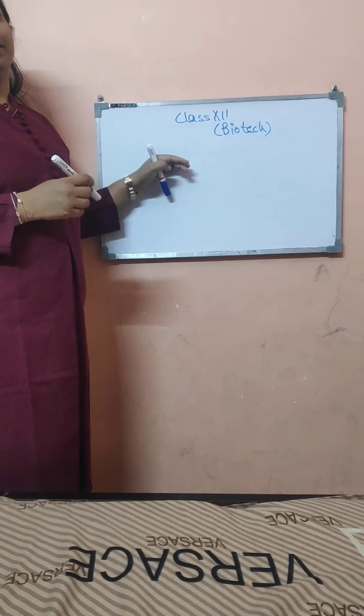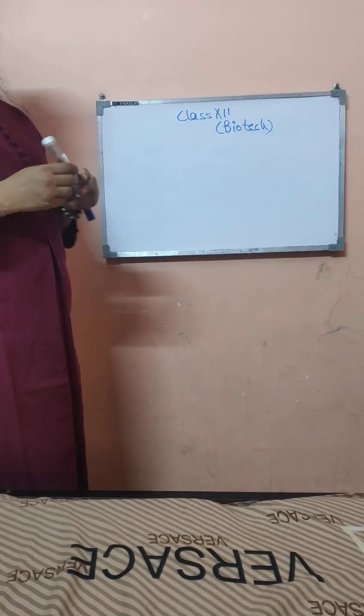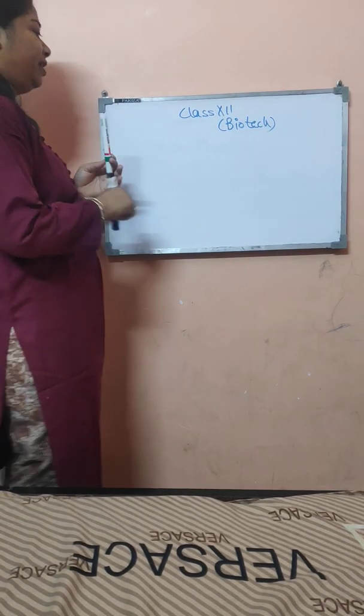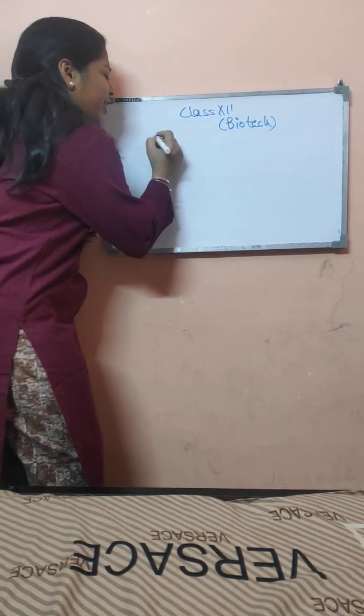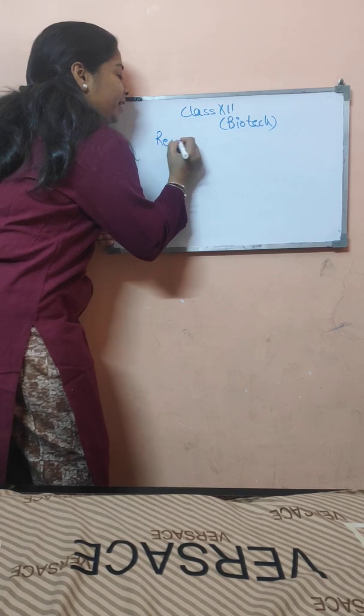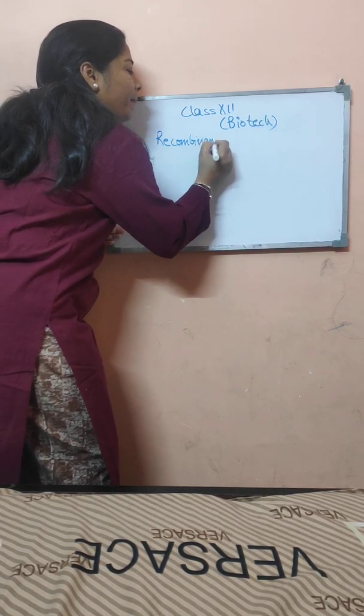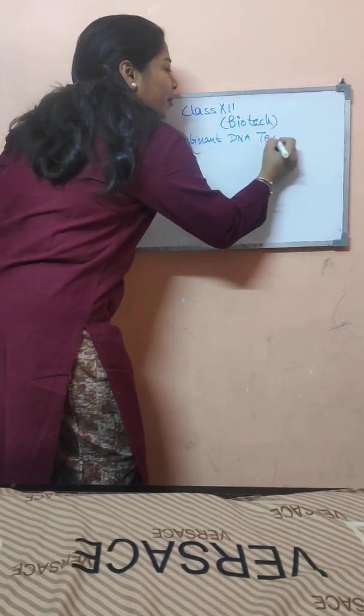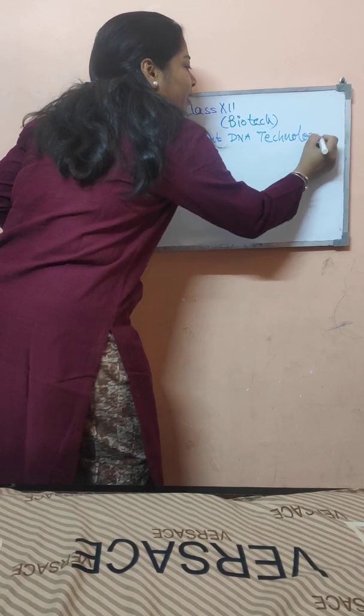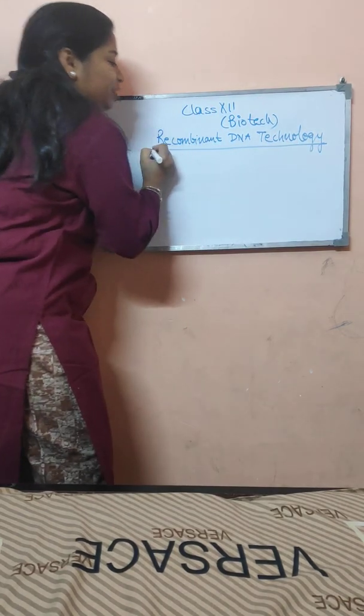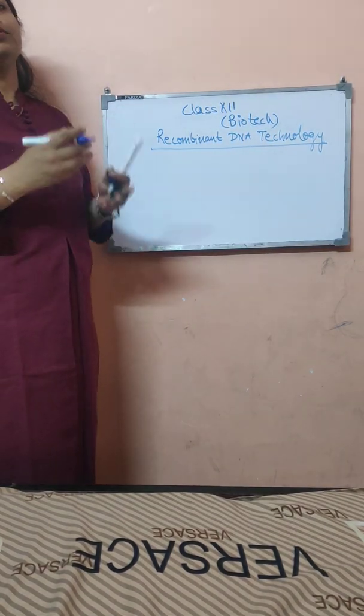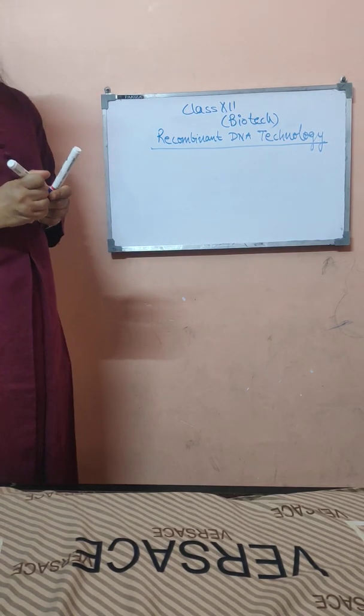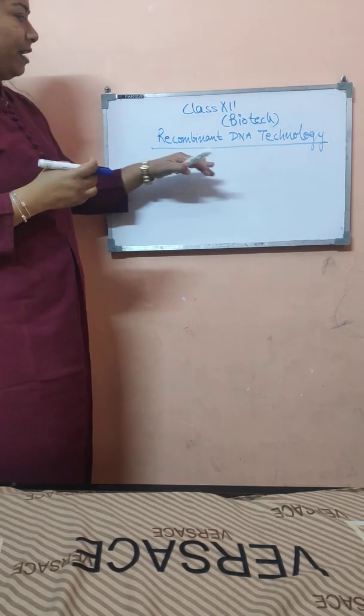The first chapter of class 12 under unit 5 is recombinant DNA technology and this is the basic of biotech. More importantly, this chapter you will also study in class 12 biology with heavy weightage. So we have to deal with it carefully.